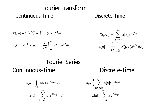Fourier is used to analyze the signal — what frequency components are there. Basically, there are two types of signals: periodic and aperiodic signals. For periodic signals we use the Fourier series. The analysis equation is used to convert the time domain signal into the frequency domain signal for the continuous time signal.